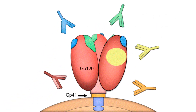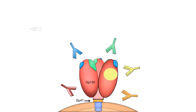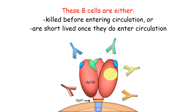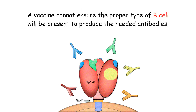A main challenge to producing these antibodies is that many B cells capable of producing broadly neutralizing antibodies are often too broad in what they can bind — these antibodies can also sometimes bind to healthy tissues. To protect the body from such antibodies, these B cells are either killed before entering circulation or are short-lived once they do enter circulation. This provides a very brief window of time for these B cells to be stimulated by a vaccine to produce antibodies. While a vaccine can provide antigen to stimulate B cells, it cannot ensure the proper type of B cell will be present to produce the needed antibodies.